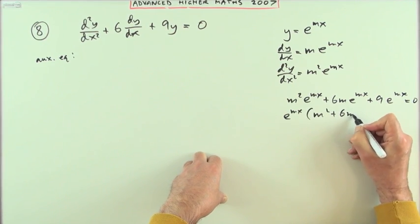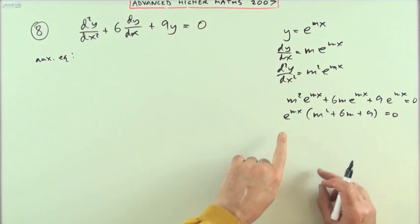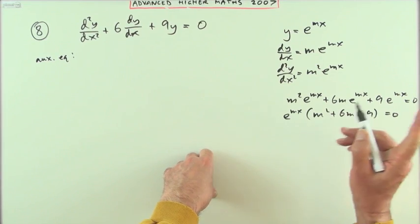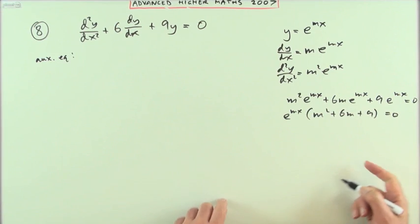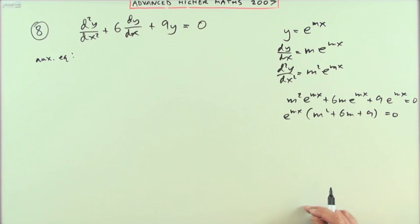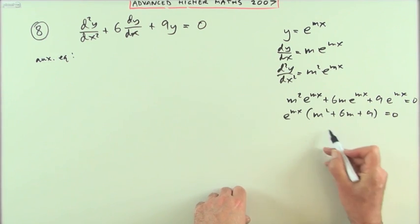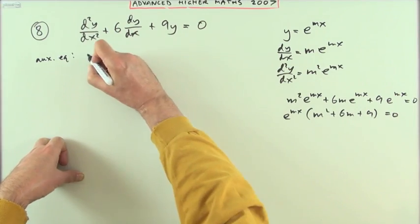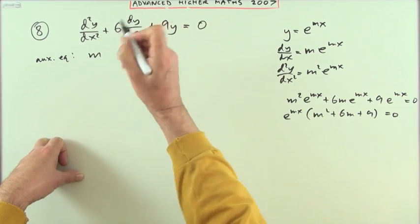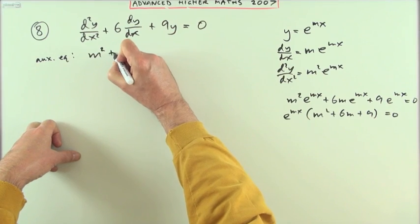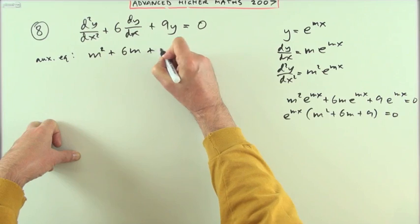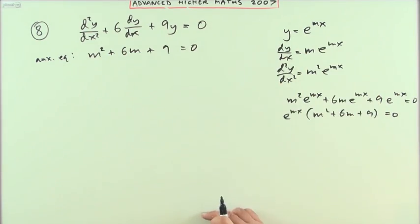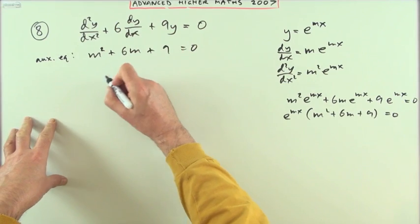There's a factor of e^(mx) I'll take out, and what I'm left with is m² + 6m + 9 = 0. I'm not going to get e to the something equals zero because the graph of e^x has the x-axis as its asymptote. The solution will come from this part - this auxiliary equation, taking down those numbers 1, 6, and 9, the coefficients.